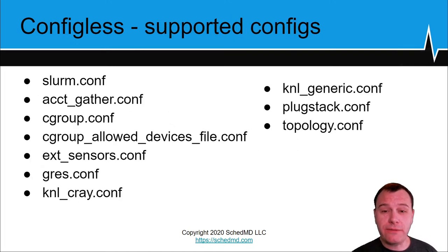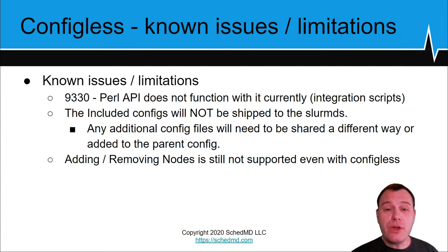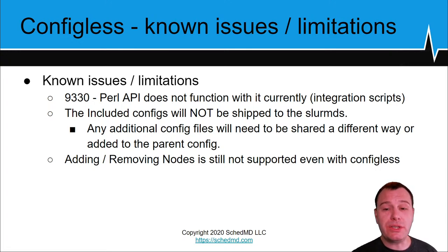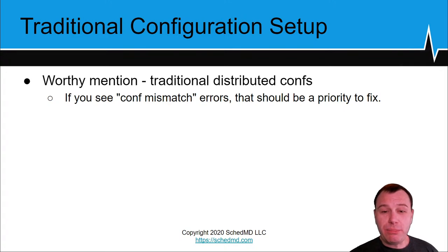Note that we do not copy any #include files with configless, so please consolidate include configuration files into one file or use another method to distribute them. There are a few known issues: the Perl API does not work with configless, which affects sites using the integration scripts. Also, include files will not be distributed with this model, and adding and removing nodes is still not supported even with configless. If you plan to use the traditional method and distribute config files, do not ignore conf mismatch errors — they should be a priority to resolve.